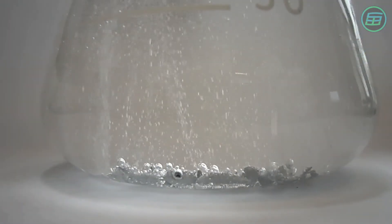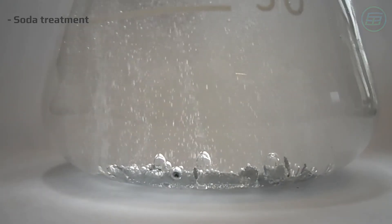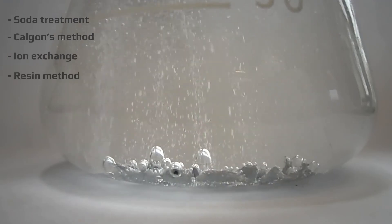Removing permanent hardness requires special chemical methods, such as soda treatment, Kalgen's method, ion exchange or the resin method.